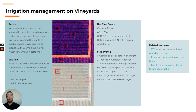When checking the NDRE map, it was possible to determine which spots had been leaking for longer and thus needed fast repair. On the right side of the slide, you can check more interesting cases.